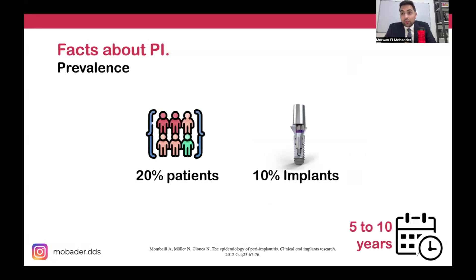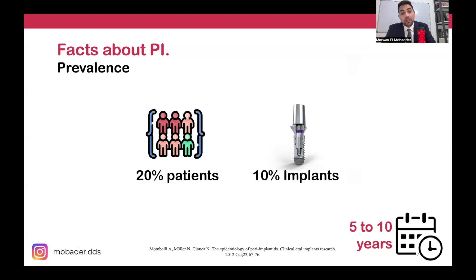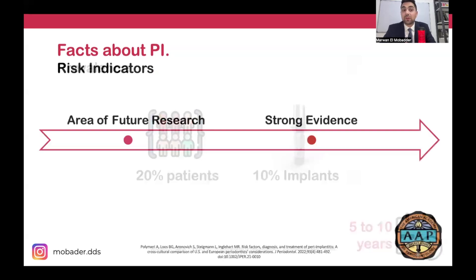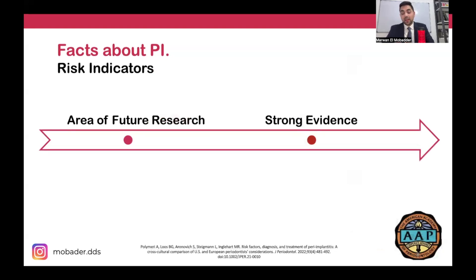Based on epidemiological studies, 20% of patients who receive dental implants will have a risk of peri-implantitis. As a pathology, this is quite frequent. Furthermore, 10% of the implants placed will result in peri-implantitis. So it is a frequent condition that results in bone destruction and has several risk indicators.